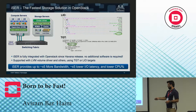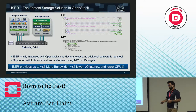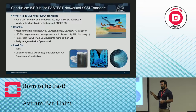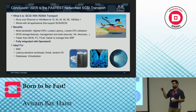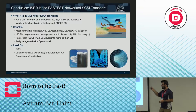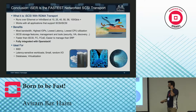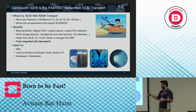If you use iSER with the TGT or LIO default targets, you can get up to five times better bandwidth, more IOPS, and lower latency. To summarize: iSER is the fastest networked SCSI transport solution, working at speeds of 10, 25, up to 100 gigabits and above. It is the fastest fully integrated solution for block storage in OpenStack, and it is ideal for fast storage devices.